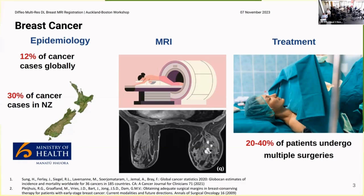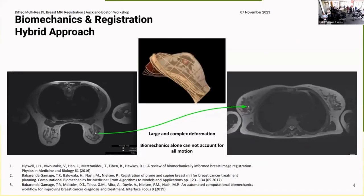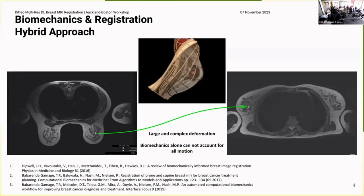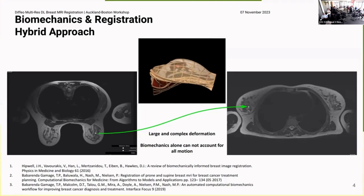However, this image is taken in the prone position while treatment is performed in the supine position. There's a large change in the breast between these positions, which makes it very challenging to track the tumor location and can lead to a 20 to 40% re-operation rate for patients.